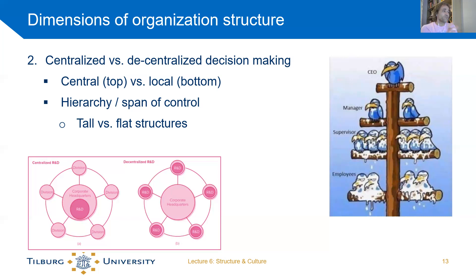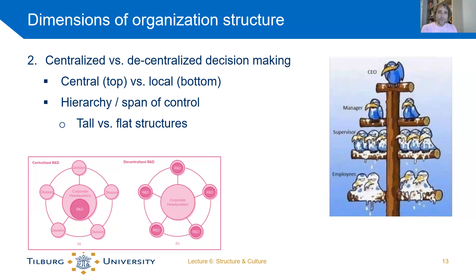Centralization also relates to the span of control. Some organizations have a tall structure with many layers — CEO, general manager, manager, supervisor, employee — lots of levels. Other organizations have a flat structure: CEO, a manager, maybe a sub-manager, and that's it. Only a few steps before you're at the top.